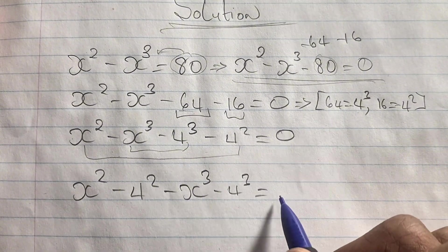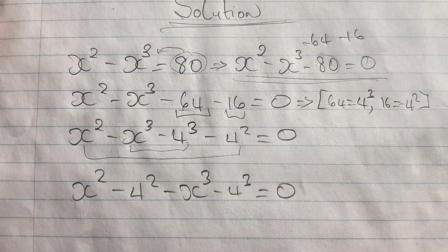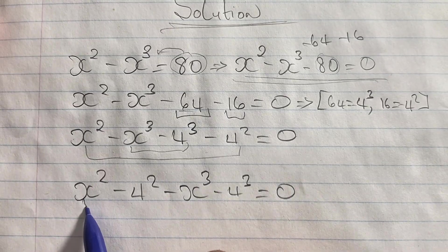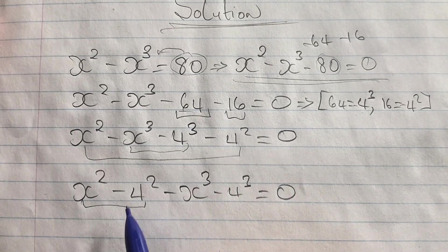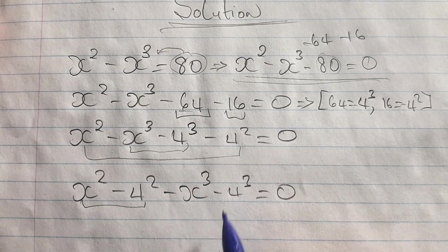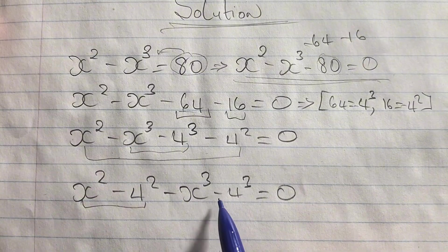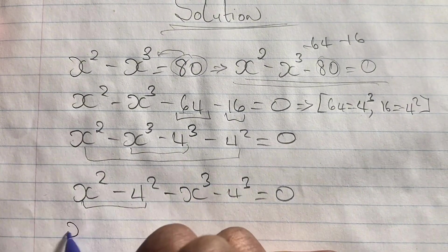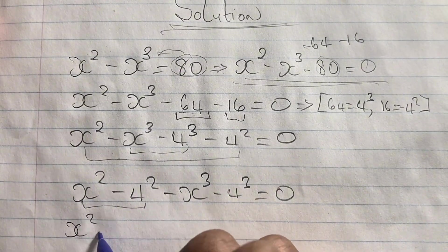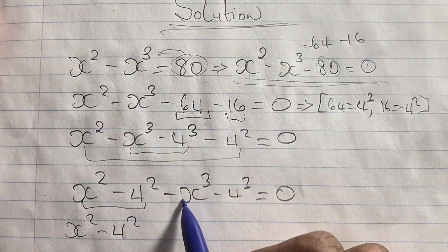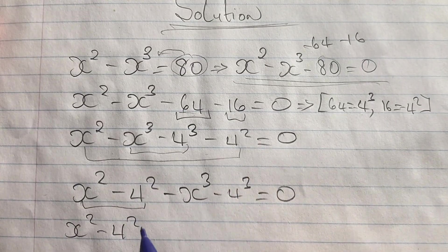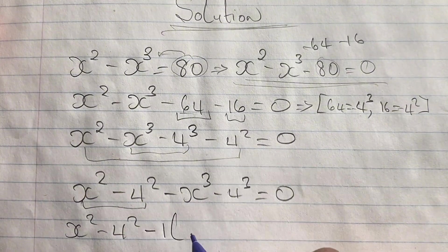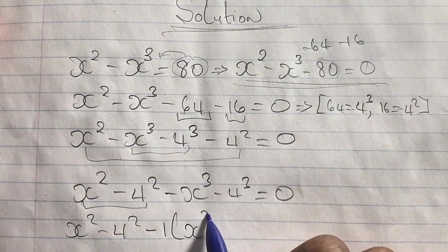Looking closely, we can see we have the difference of two squares in the first group. In the second group, even though it looks like the difference of two cubes, we factor out negative one. So we have x squared minus four squared, and then negative one times the quantity x cubed plus four cubed, equal to zero.